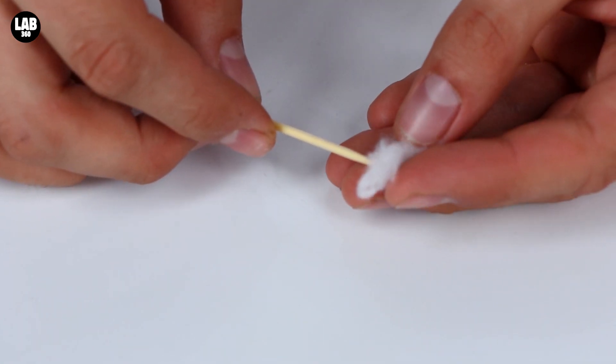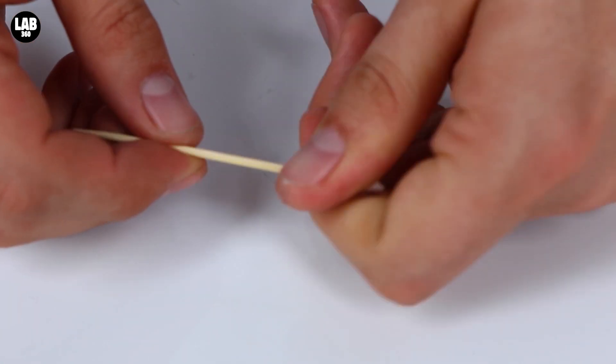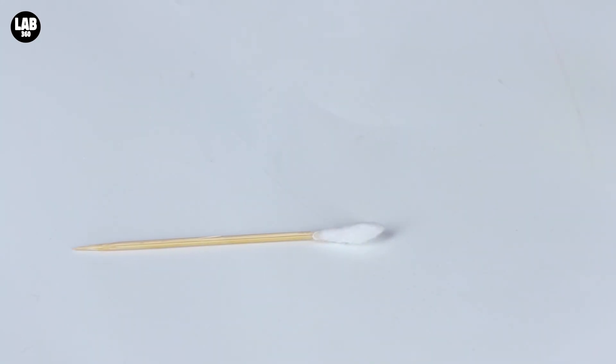Number six. The do-it-yourself cotton bud. Simply wind some cotton wool around the tip of your toothpick.